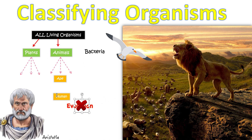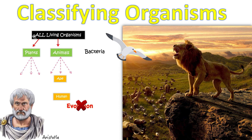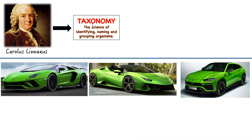Evolution would change the way we classify organisms in a more accurate way. Because Aristotle was not entirely correct, another guy came along. His name was Carolus Linnaeus. He came after Aristotle so he had more knowledge, and he started the idea of taxonomy. Taxonomy is the science of identifying, naming, and grouping organisms — a fancy way of saying what we just talked about. So you call him a taxonomist; a taxonomist does taxonomy.